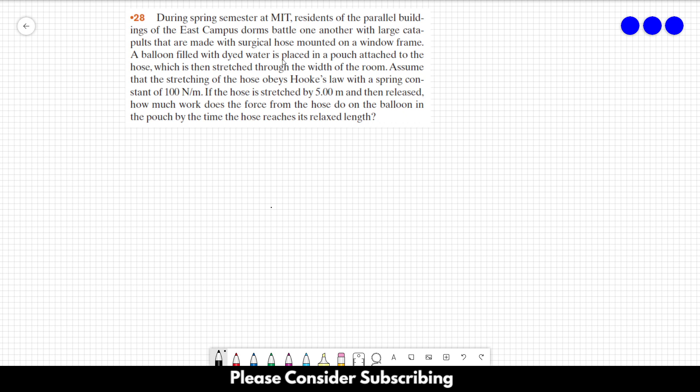A balloon filled with dyed water is placed in a pouch attached to the hose, which is then stretched through the width of the room. Assume that the stretching of the hose obeys Hooke's law with a spring constant of 100 newtons per meter.